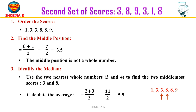The next step is the middle position calculation. To find the middle position, add 1 to the total number of scores and divide by 2. Here we have 6 scores, so (6 + 1) ÷ 2 = 7 ÷ 2 = 3.5.